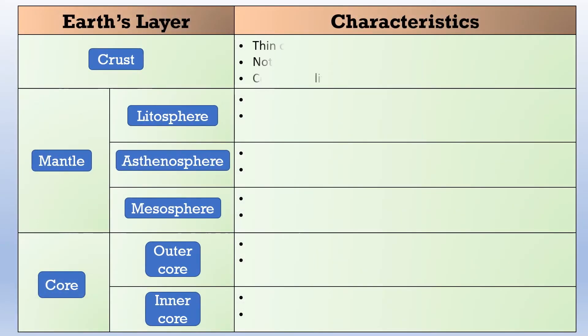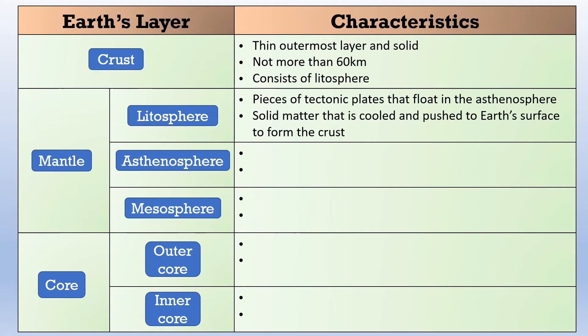Let us start with the crust. The crust is actually the thinnest outermost layer of our earth and it is mostly solid. The thickness is not more than 60 km and it actually consists partially of the lithosphere. Lithosphere is actually pieces of tectonic plates that float around the asthenosphere. It is made out of solid matter that is cooled and pushed to the earth's surface which forms our crust.